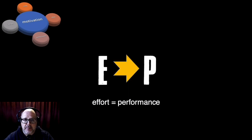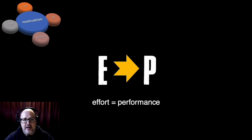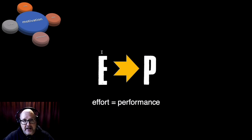When we run into expectancy theory, we come into this short concept of E leads to P. E is short for effort, P is short for performance. There's this idea that we have a certain amount of effort that we put into an activity and we expect — that's why it's called expectancy theory — a certain level of performance to come out of that effort.